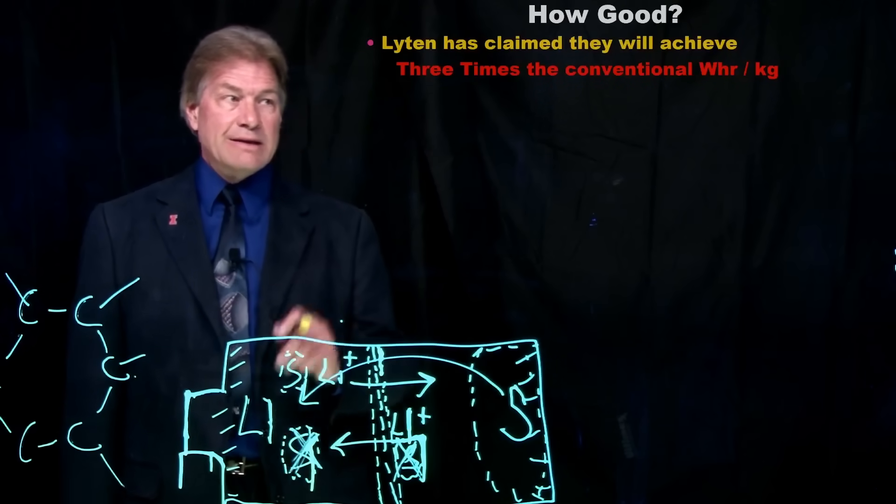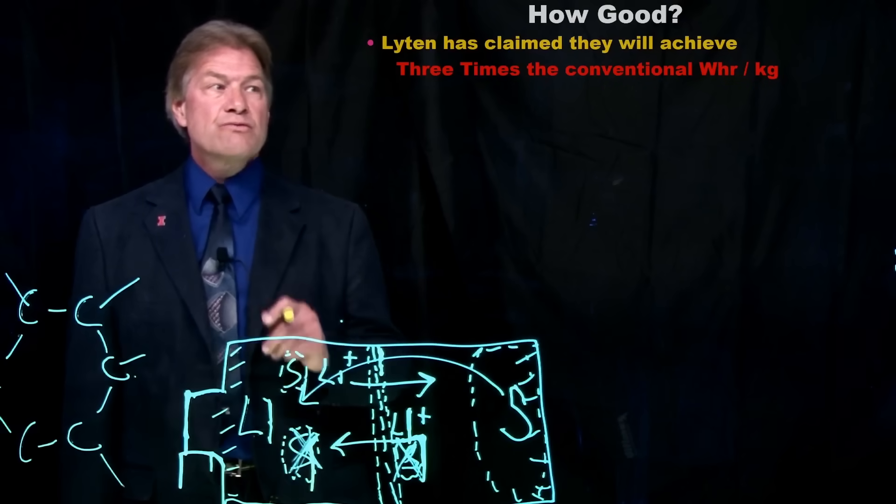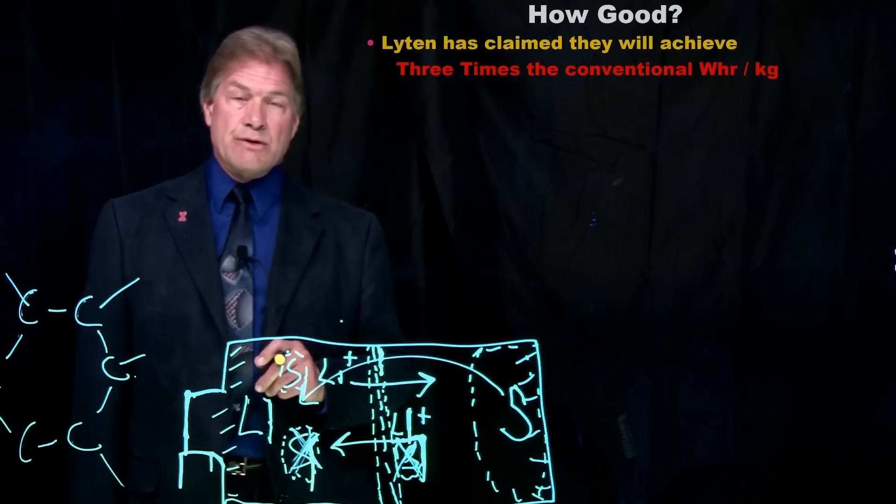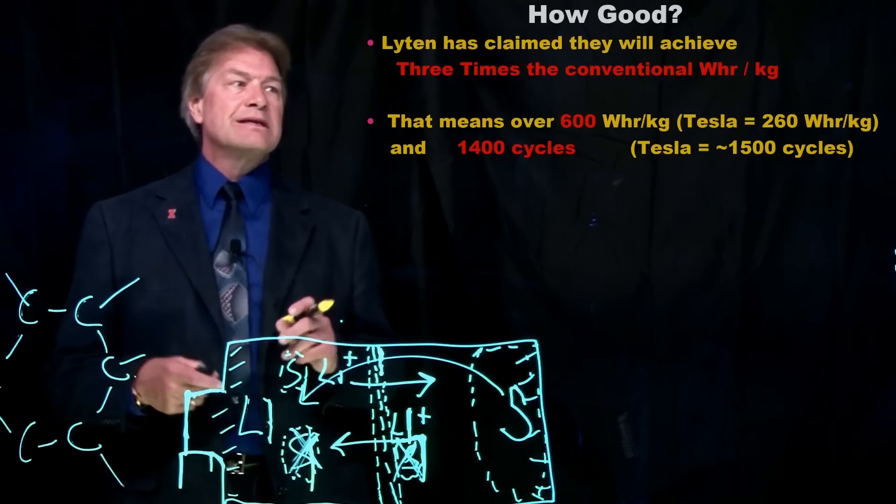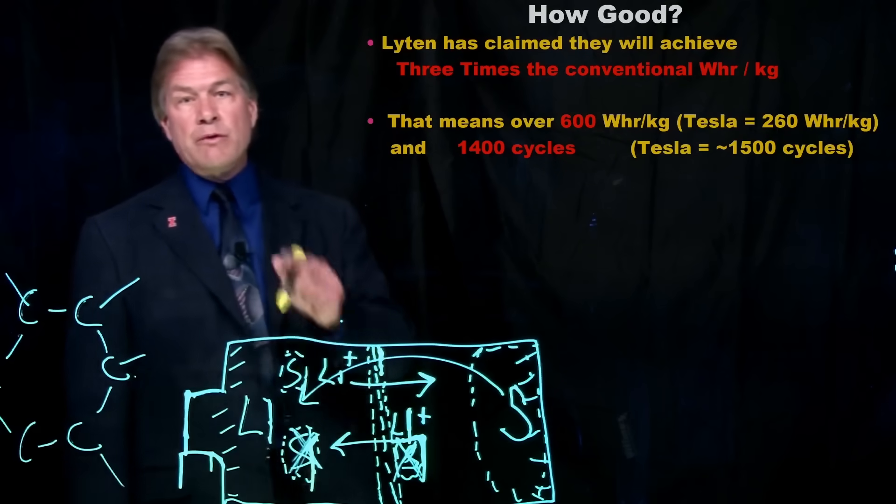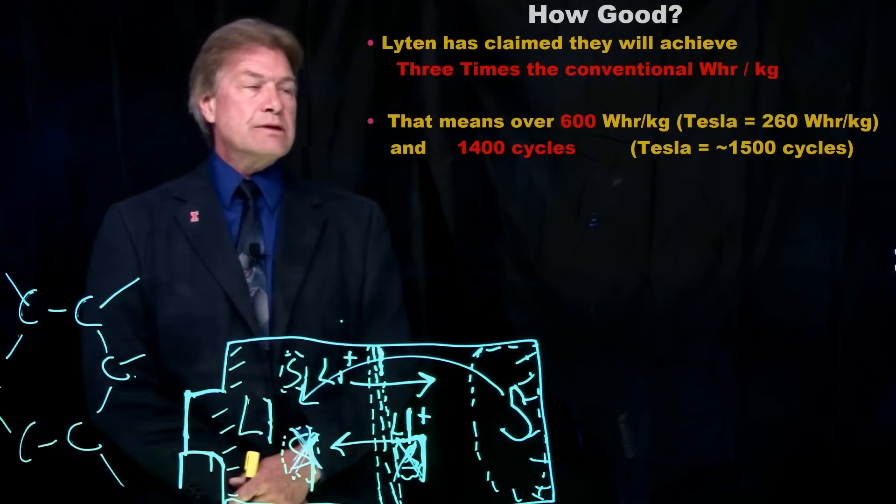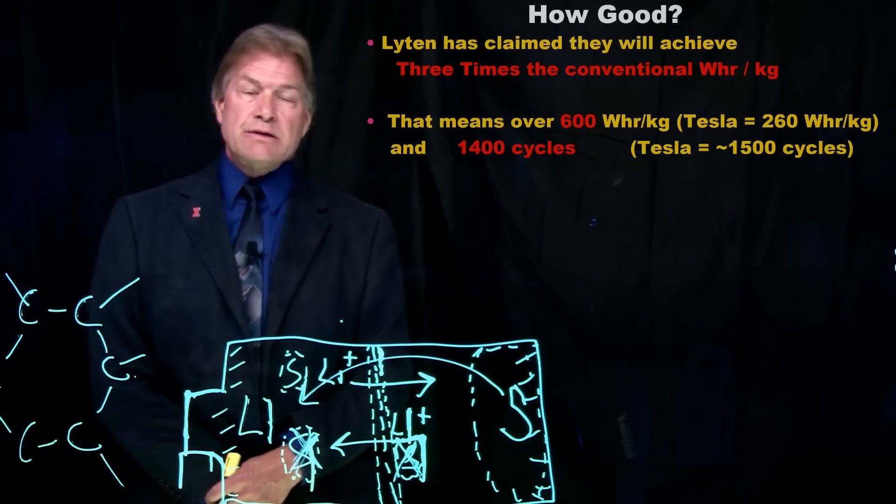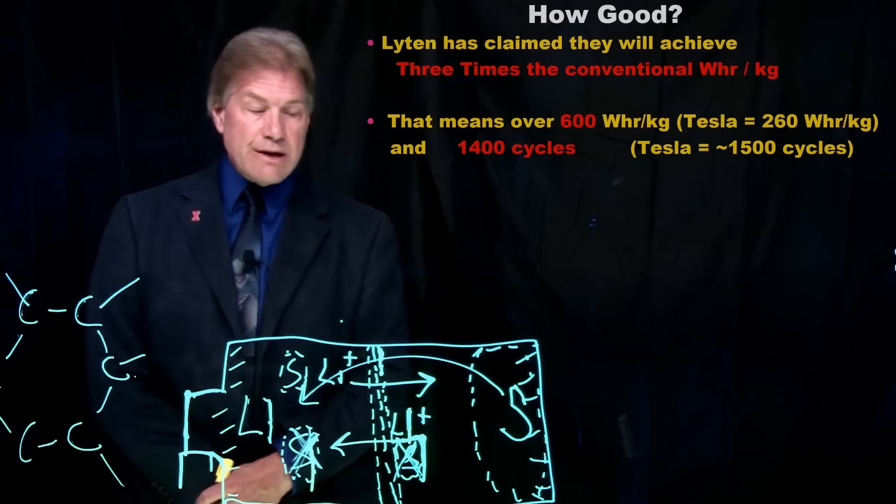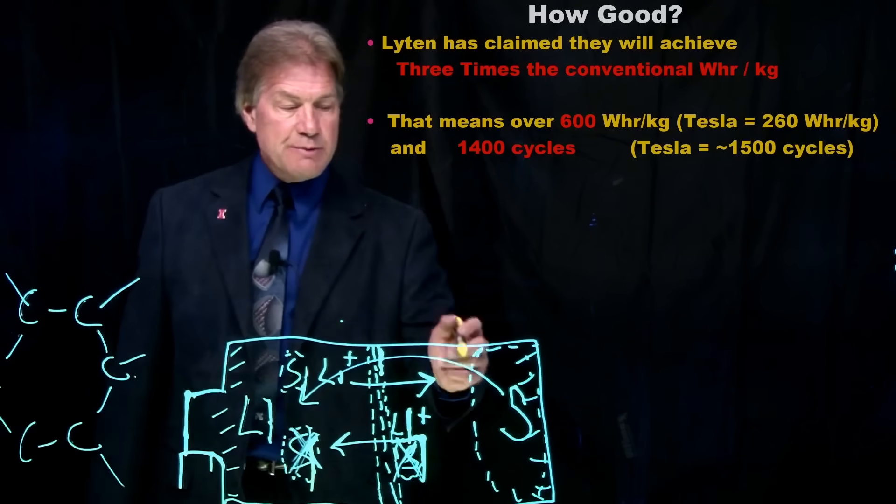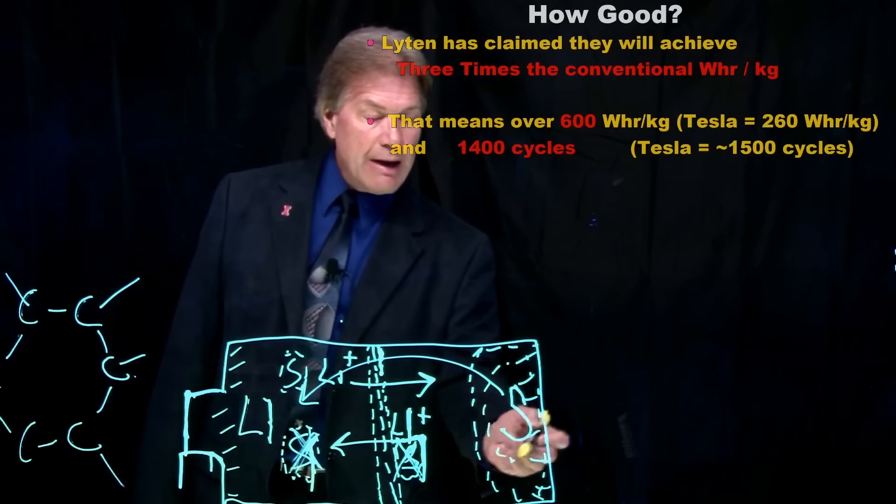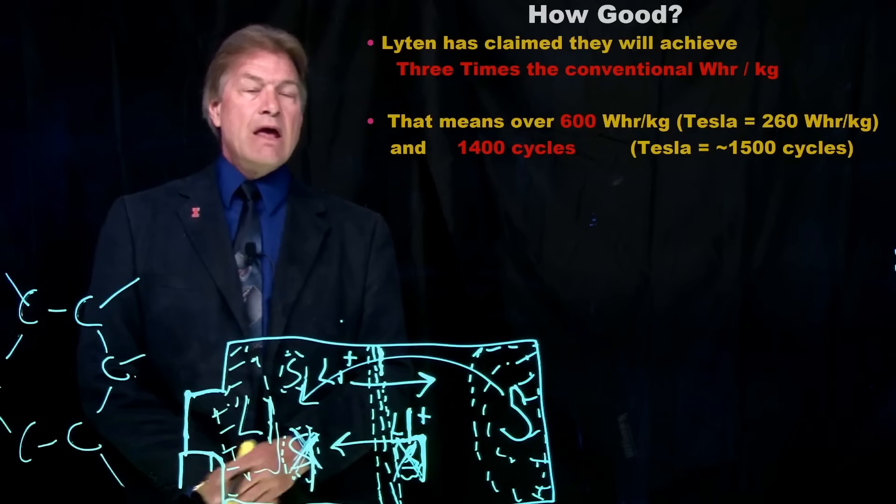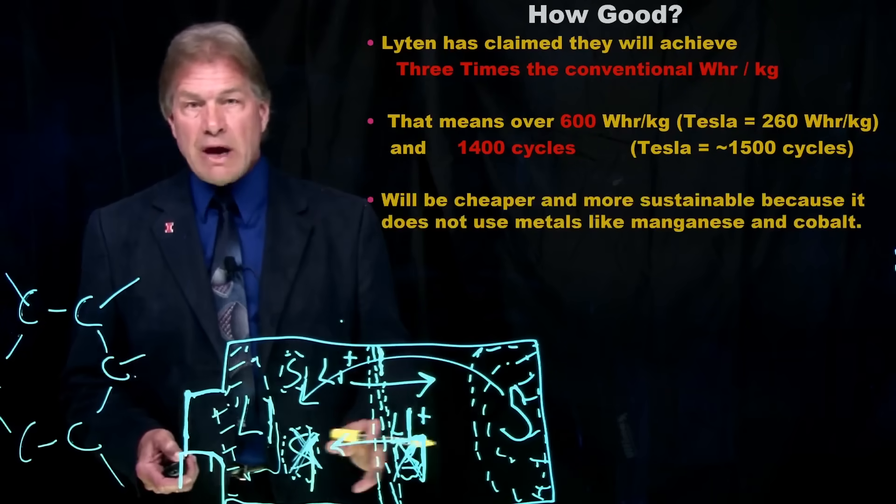Well, Lighten has claimed they will achieve three times the conventional watt-hour storage. And that means it's at least 600 watt-hours per kilogram. And remember, the Tesla was 260 watt-hours per kilogram. So more than double, at a minimum. And they've tested it for 1,400 cycles. This polysulfide shuffle has been eliminated by the addition, all in here, of the graphene. So this is a dramatic improvement.